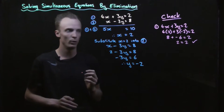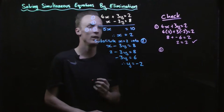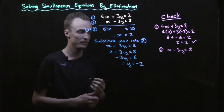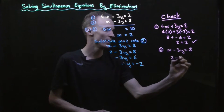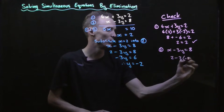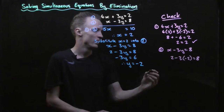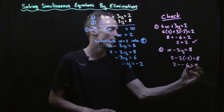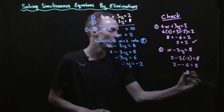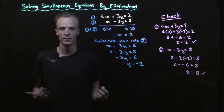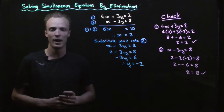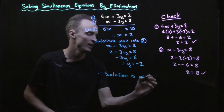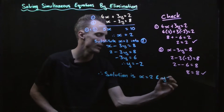We need to check it works for equation 2 as well. Equation 2 is x subtract 3y equals 8. Substituting our x value of 2: 2 subtract 3 times negative 2 equals 2 subtract negative 6, which is 8. So it all balances, and we've found a solution that works for both equation 1 and equation 2 — that solution being x equals 2 and y equals negative 2.